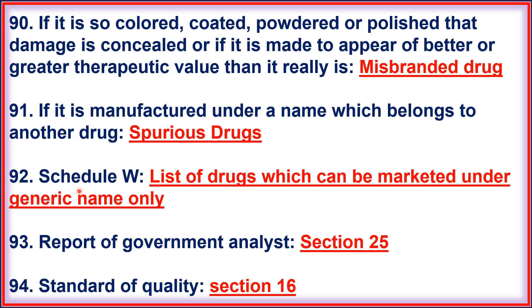90. If it is so colored, coated, powdered or polished that damage is concealed, or if it is meant to appear of better or greater therapeutic value than it really is, it is called a misbranded drug. 91. If it is manufactured under a name which belongs to another drug, it is a spurious drug. 92. Schedule W: List of drugs which can be marketed under generic name only. 93. Report of Government Analyst comes under Section 25.